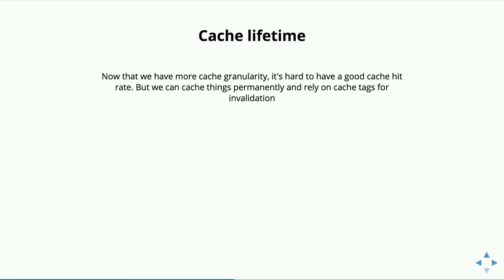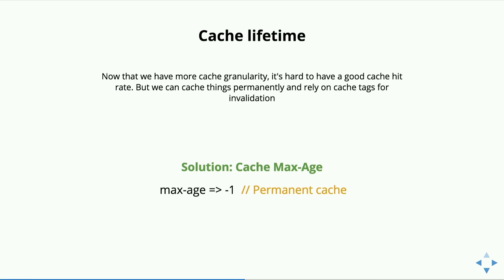Then you decide: should I cache this, and for how long? If it's too granular, too personalized, or too dependent, maybe you don't want to cache it. You control this with the cache max-age parameter: set -1 for permanent cache, 0 for no cache, or a number of seconds. You'll use -1 and 0 most of the time because with all those other tools, you have an invalidation mechanism and don't need to set a cache lifetime.